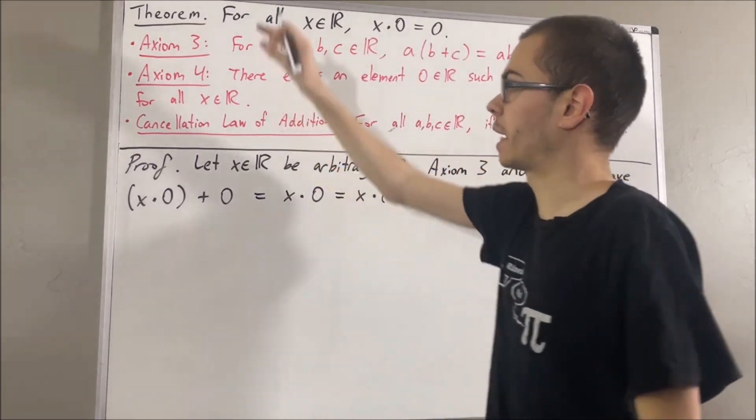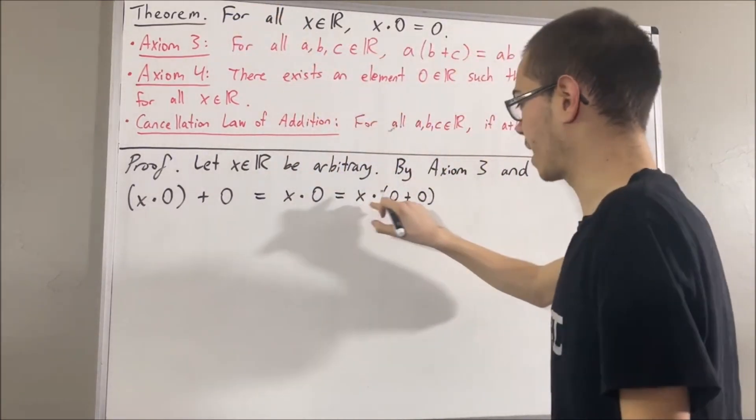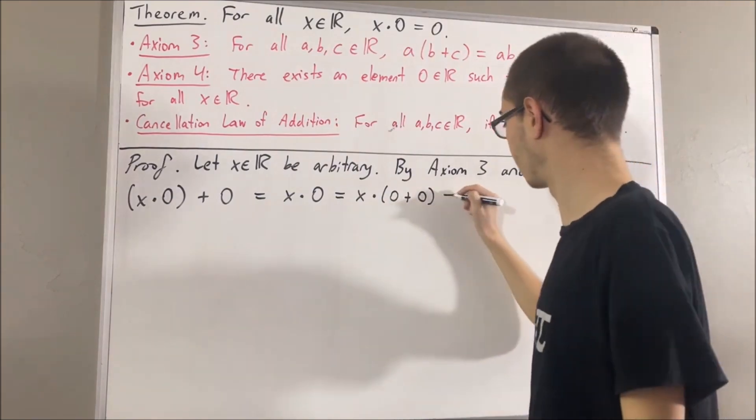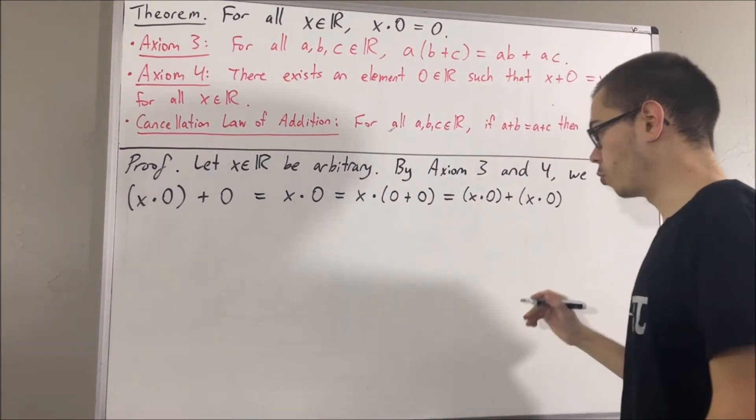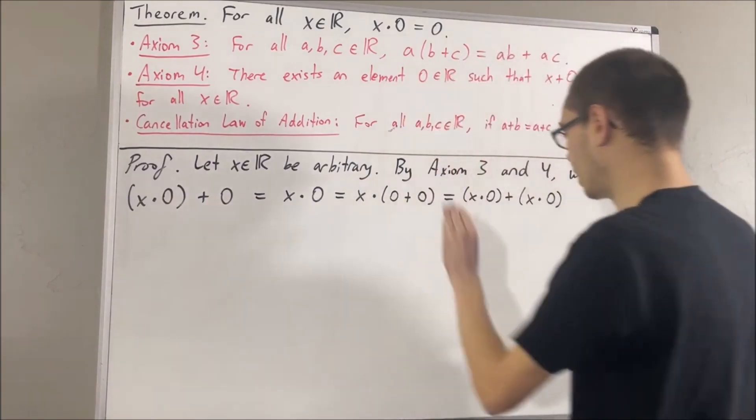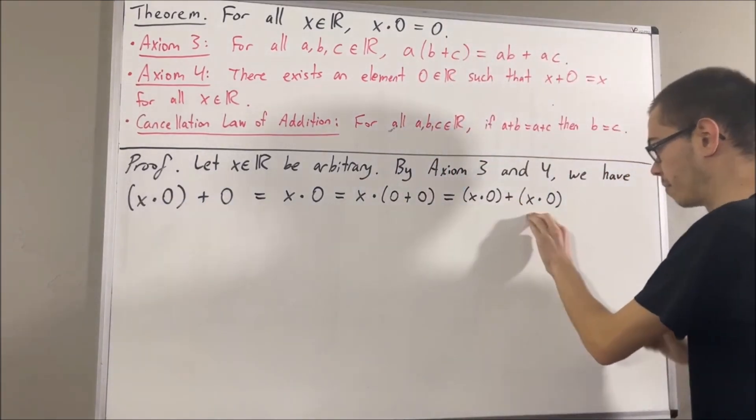And then, applying axiom 3, we can distribute x across this parentheses. So, we have x times 0 plus 0 equals x times 0 plus x times 0.